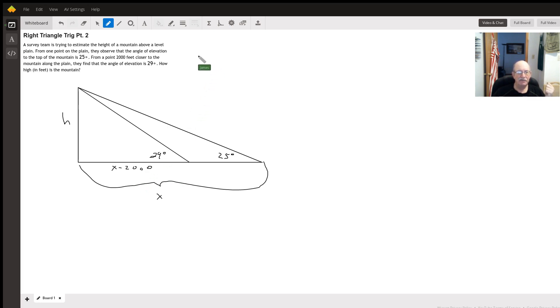So we have tangent of 25 is going to equal h divided by x. And we also have the tangent of 29 is going to equal h over x minus 2,000.